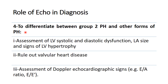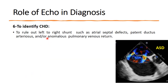Echocardiography can help to differentiate between group 2 pulmonary hypertension and other forms of pulmonary hypertension through evaluation of left ventricular systolic and diastolic function, left ventricular hypertrophy, to rule out valvular heart disease, as well as assessment of echocardiographic signs such as E/E' ratio. Echocardiography can also help to identify congenital heart disease, especially left-to-right shunts including ASD, PDA, or anomalous pulmonary venous return.